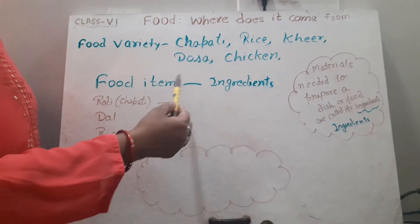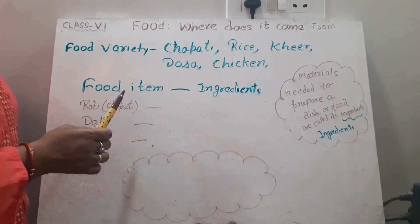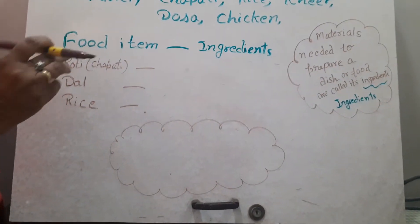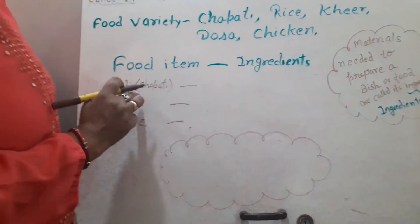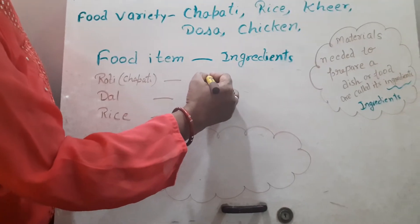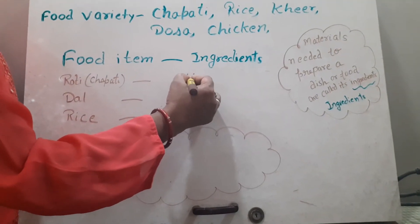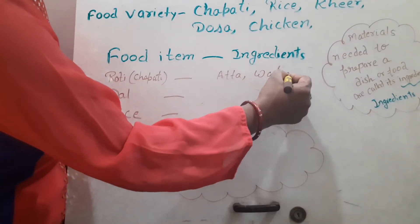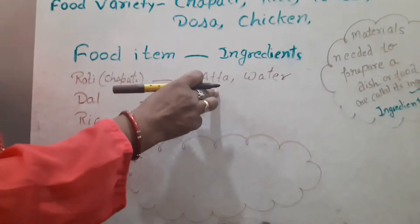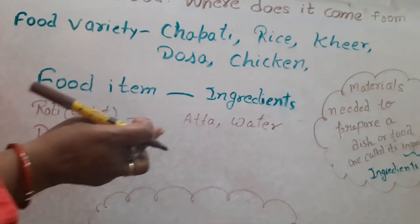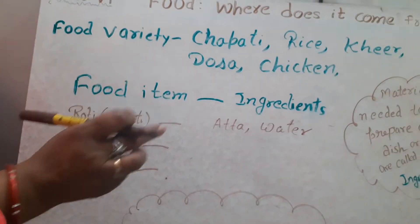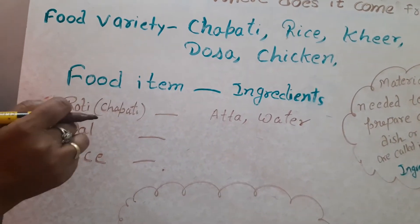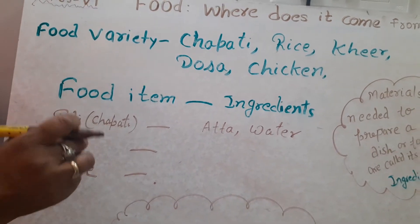Let's find out its meaning. Materials needed to prepare a dish or a food are called its ingredients. For example, roti — how is it made up? What ingredients is it made of? Water and flour — these are two ingredients. Then you will make chapati. In previous classes, you have learnt how to make chapatis.